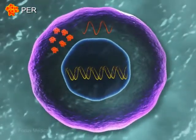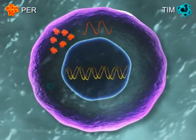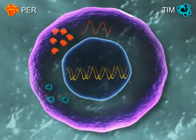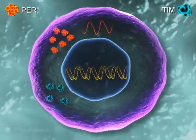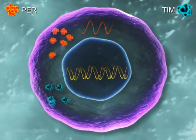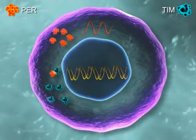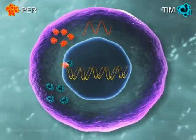Subsequently, a second body clock gene called TIMELESS produces the TIM protein. This protein binds to the PER protein, and the complex blocks the PER gene activity.